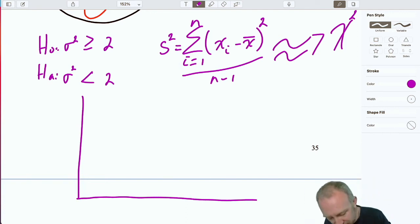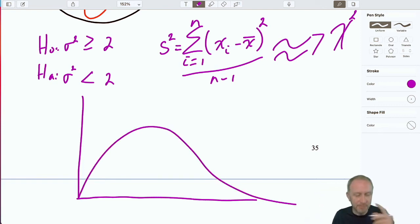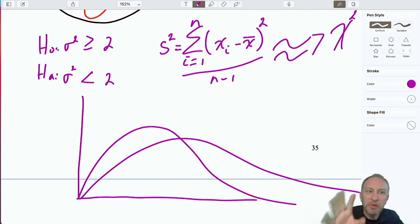So my distribution is really going to start to look kind of bell-shaped, but never perfectly symmetric like a normal distribution or a t-distribution. And certainly, there will never be any negative values. That's really it.